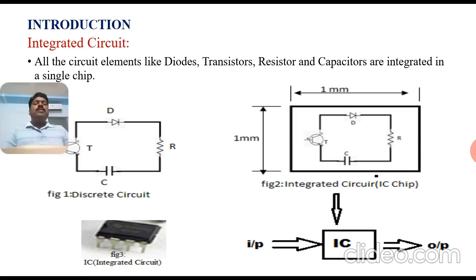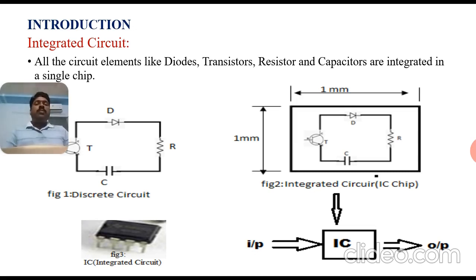When technologies improve, the size of the circuit also increases — that is the major drawback. Power consumption increases and the cost of the system also increases. So instead of these, we prefer integrated circuits. The IC chip is very small; it occupies very less area, meaning the size of the system is reduced compared to discrete circuits.